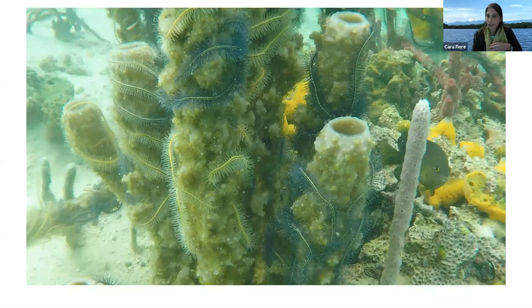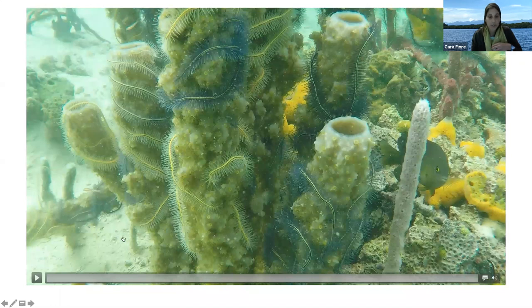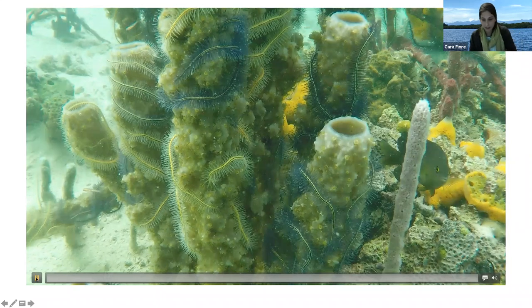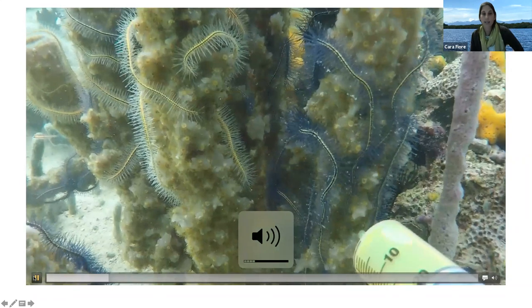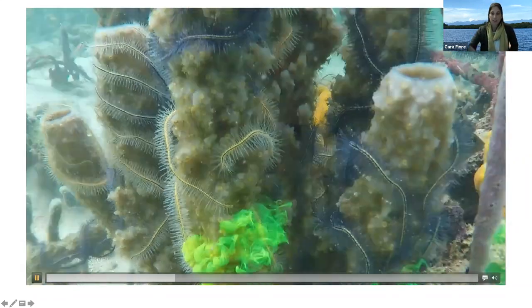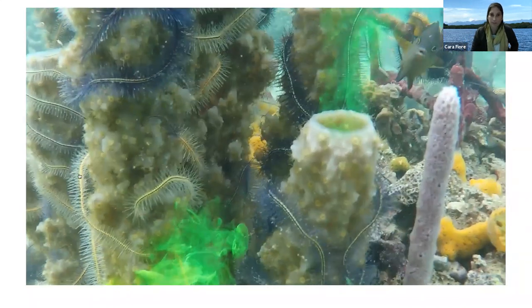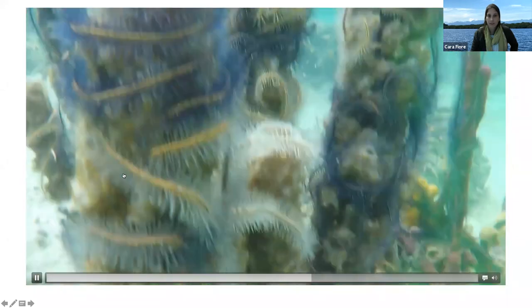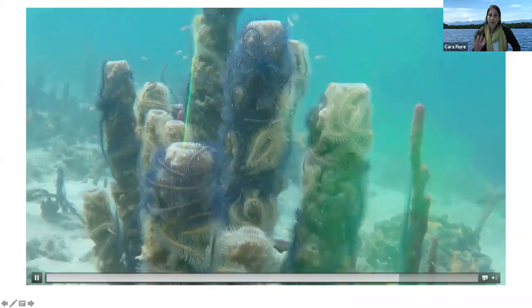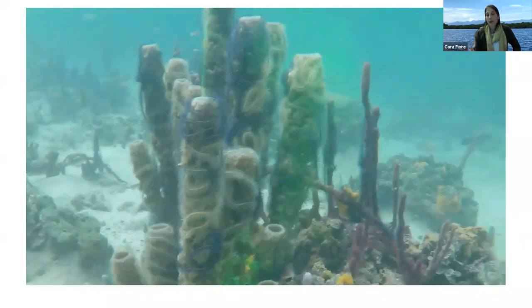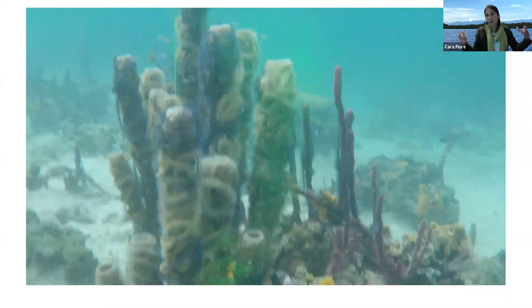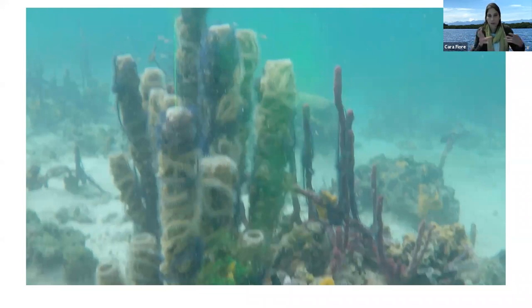I'm going to start with microbial ecology. I wanted to show you a video of sponge pumping because it captures the impact sponges can have on a reef. You'll see me add some fluorescein dye at the base of the sponge, and then you'll see it get pumped up through the sponge and out through the osculum. These sponges are pretty impressive filter-feeding animals. If you think about the impact that one sponge can have, consider the impact on nutrient dynamics across a whole reef.